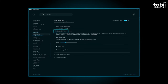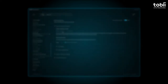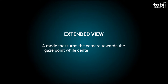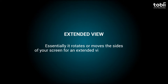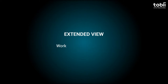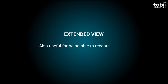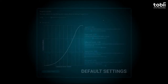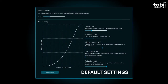This is the Gaze Tracking mode with Extended View selected. The other view, Free View, will be covered in another video. Extended View is a mode that turns the camera towards your gaze point without centering the view on it. It rotates or moves the sides of your screen for an extended viewing experience and works best with view angles below 90 degrees. It's also useful for being able to recenter the view without using a hotkey. Lastly, this is the recommended mode when Head Tracking is enabled.